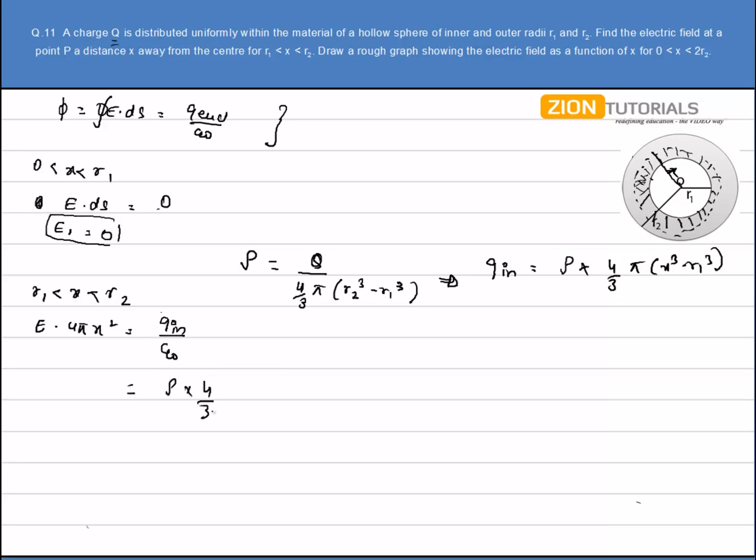Just substitute the value. I have π(x³ - R1³). So 4/3 π and 4/3 π is cancelled. This 4π comes down over here.